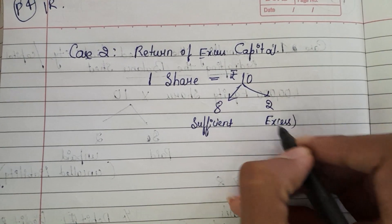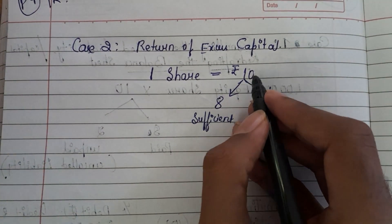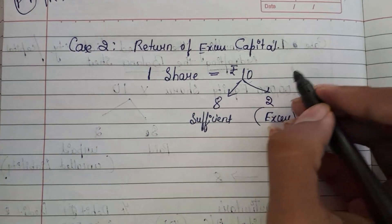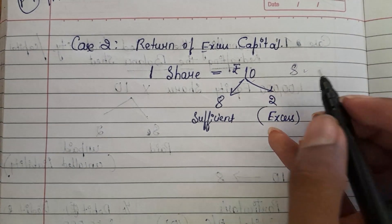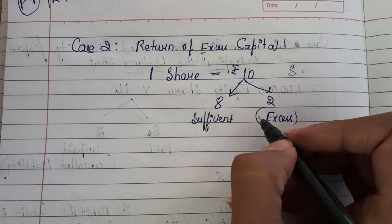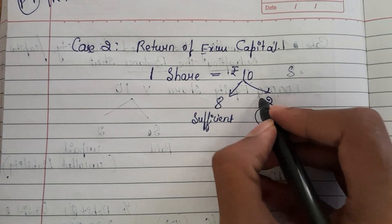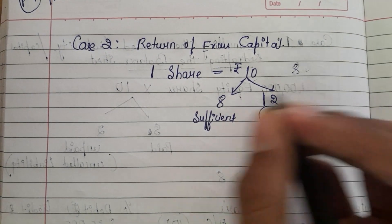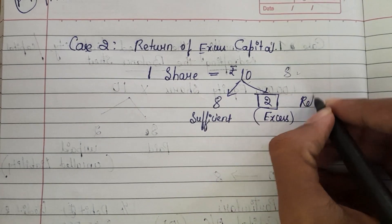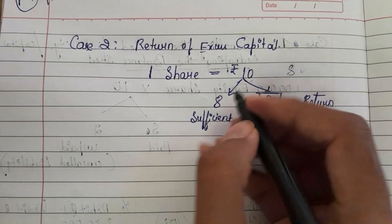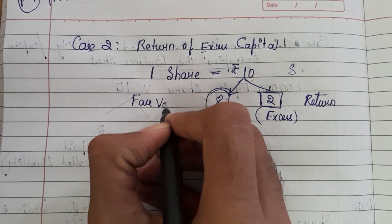I will feel that 2 rupees is not required. Simply, I have collected 10 rupees, but if I had issued for 8 rupees it was also sufficient. I have collected 10 rupees but 2 rupees was not needed for me. In such a case, we need to return this 2 rupees so that the face value becomes rupees 8.